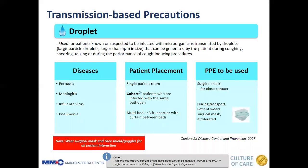Next is droplet precaution. Droplet precaution is used for patients known or suspected to be infected with microorganisms transmitted by droplets — large particle droplets larger than 5 micrometers in size — that can be generated by the patient during coughing, sneezing, talking, or during the performance of cough-inducing procedures. Examples of diseases under droplet precaution are pertussis, meningitis, influenza virus, and pneumonia.